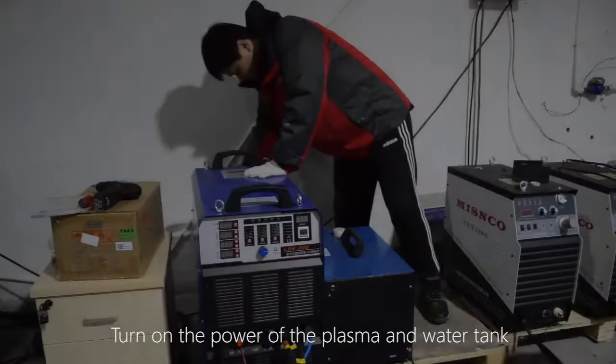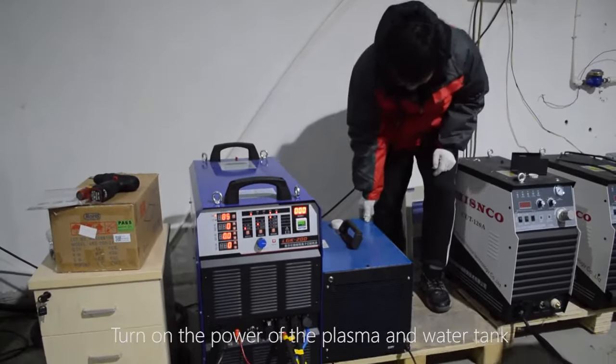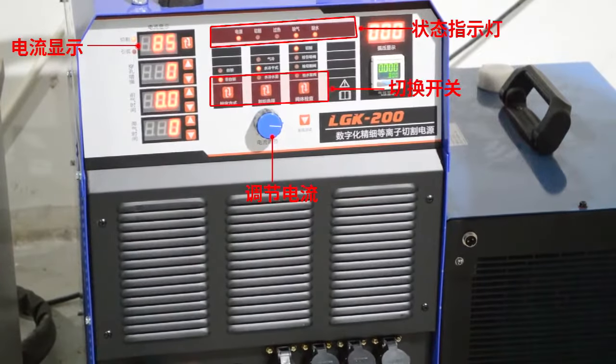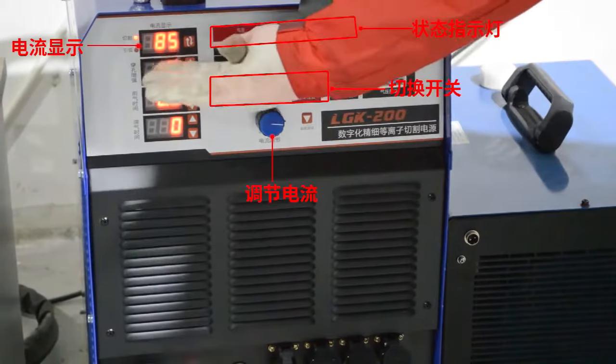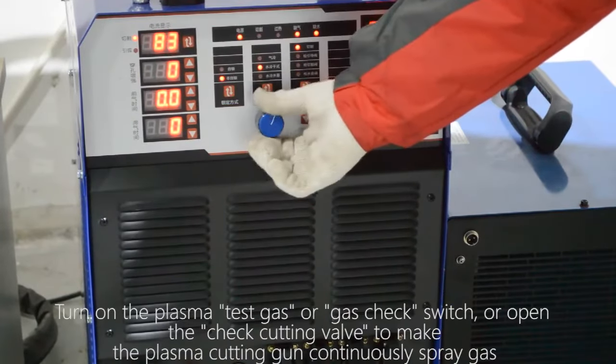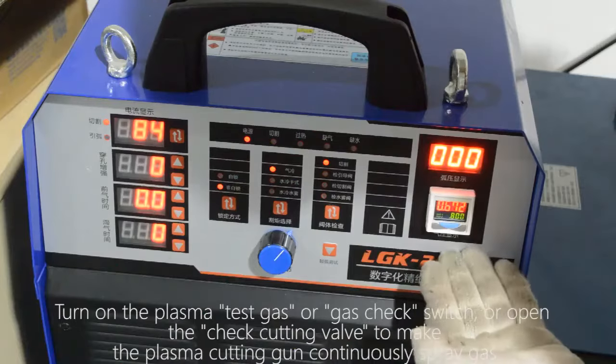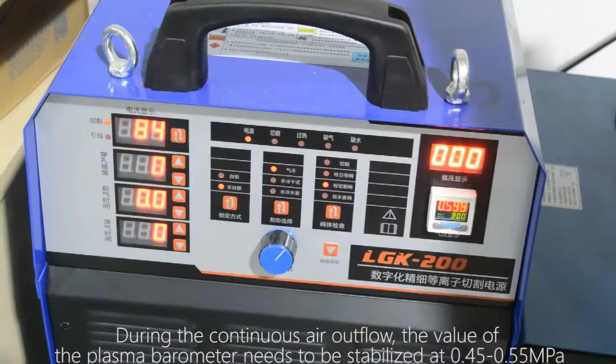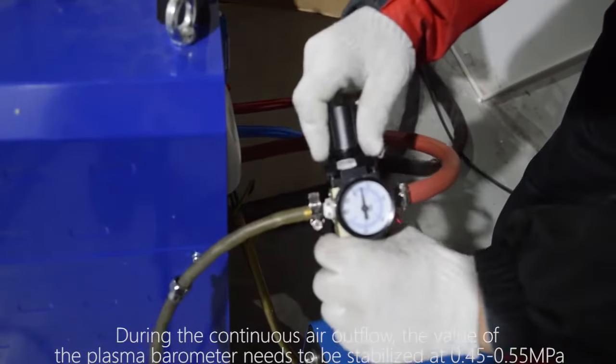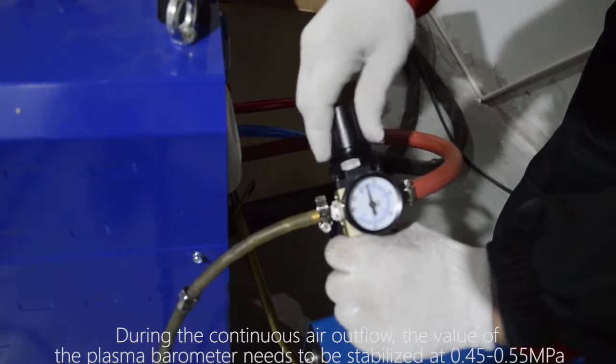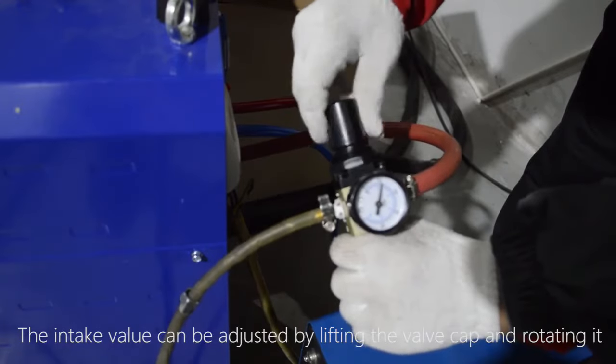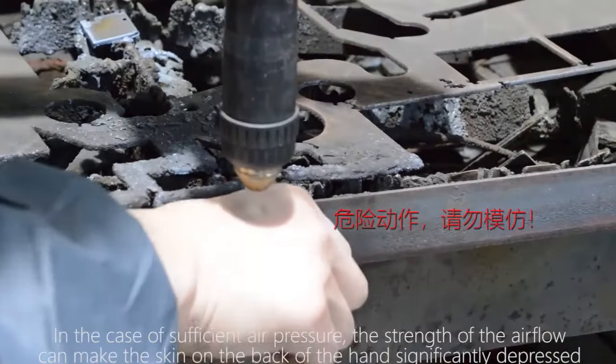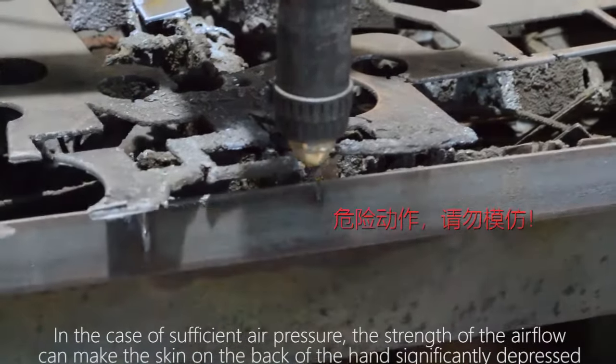Turn on the power of the plasma and water tank. Turn on the plasma test gas or gas check switch or open the check cutting valve to make the plasma cutting gun continuously. During the continuous air outflow, the value of the plasma barometer needs to be stabilized at 0.45-0.55 MPa. The intake value can be adjusted by lifting the valve cap. In the case of sufficient air pressure, the strength of the airflow can make the skin on the back of the hand significantly depressed.